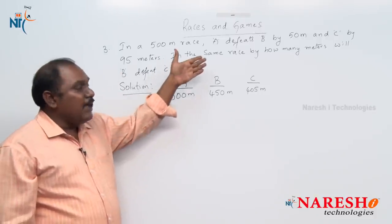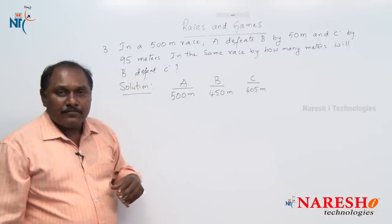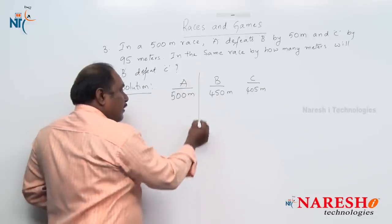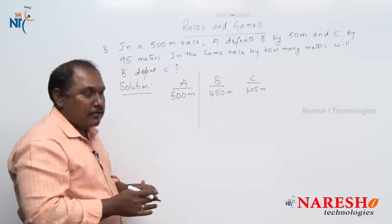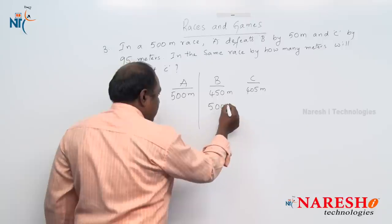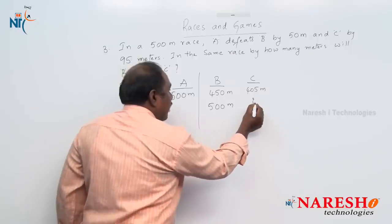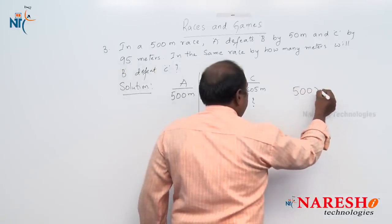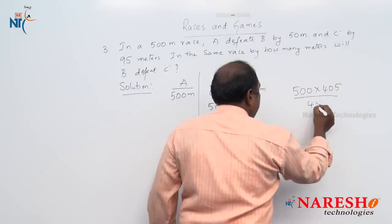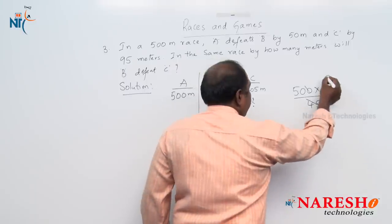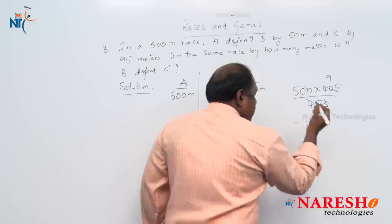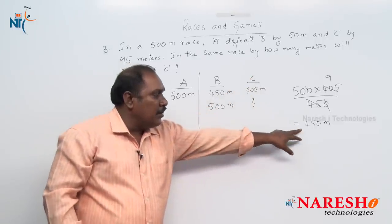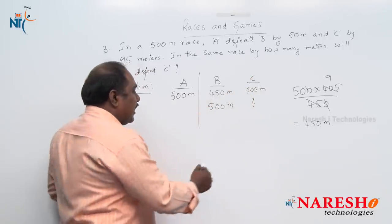What is asked: by how many meters will B defeat C? For B to defeat C, he has to complete his race. Here B has run only 450 meters, so we need to find out, by the time B runs 500 meters, how many meters will C run? Calculation: 500 into 405 by 450, cancelling zeros gives 9 into 50 which is 450. So by the time B completed his race of 500 meters, C has run 450 meters. Therefore B defeats C by 50 meters.